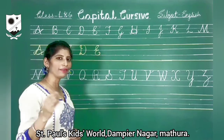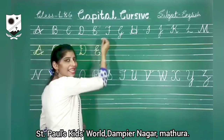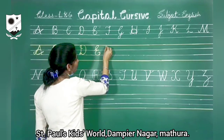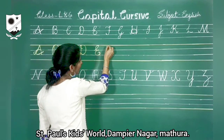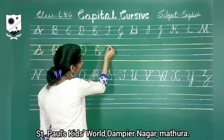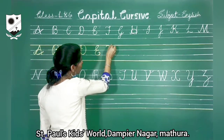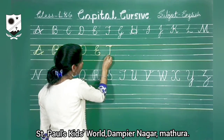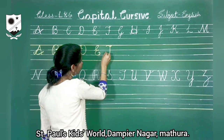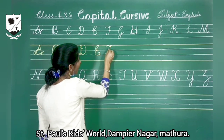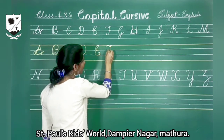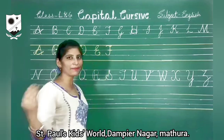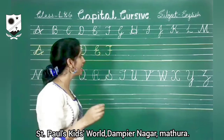Now we will learn capital F. We will start from the first line. Look here. Slightly curve. And then loop. Bring it back towards the third line. And curve. And then small slipping line. Capital F.